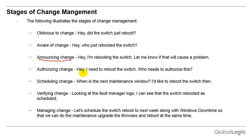It is always better to have a proper change management system. In authorized change, the person asks who needs to authorize the switch reboot — this is part of good change management. For scheduling change, the question becomes: when is the next maintenance window? Restricting a change until the next maintenance window is always a better option, because interruptions to services always cause trouble.